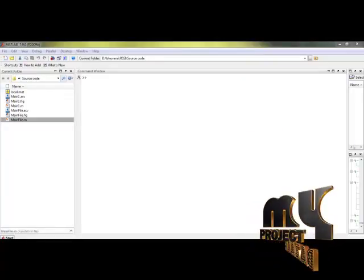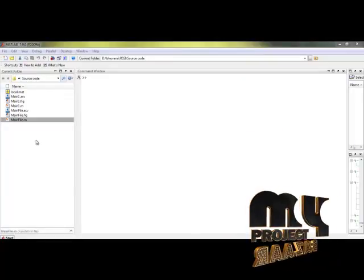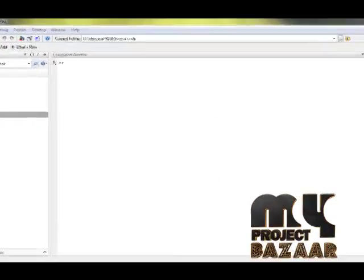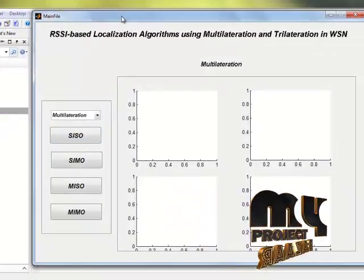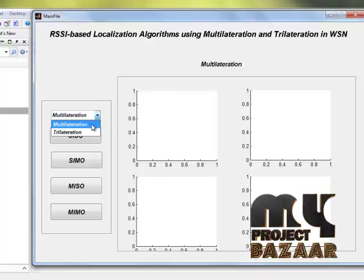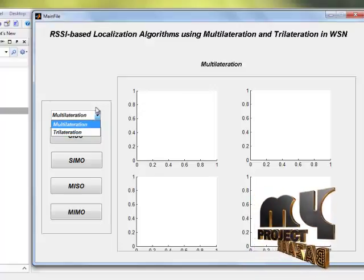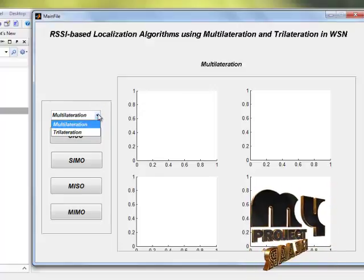Let us see the output for this process. The main code is in mainfile.m. Now I am running this file. Here there are two types, multilateration and trilateration. Now we are going to see for multilateration.